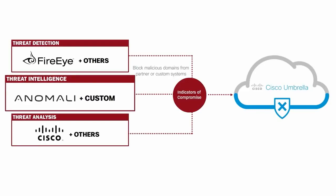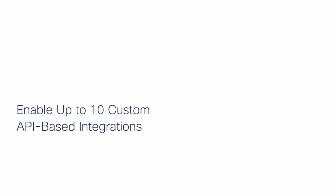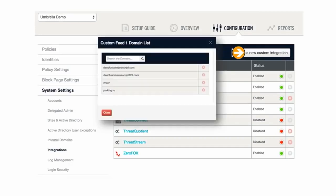Umbrella can also integrate with threat intelligence platforms — think of them like databases that capture and correlate all customer sources of threat intelligence, including vendors like Anomali. This intel can be sent to Umbrella so that customers can act on these indicators of compromise. Cisco AMP ThreatGrid is another example — malicious domains uncovered by ThreatGrid can be sent to Umbrella for enforcement. In addition to pre-built partner integrations, customers have the ability to create up to 10 custom integrations between Umbrella and other in-house systems, using custom scripts to automatically add or remove domains in a separate security category.